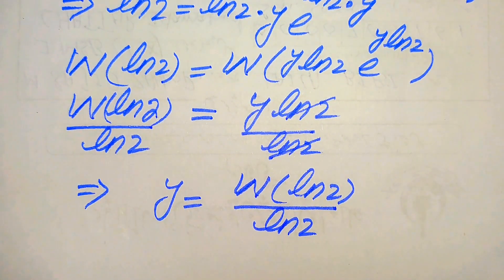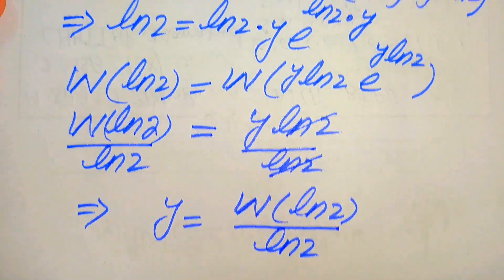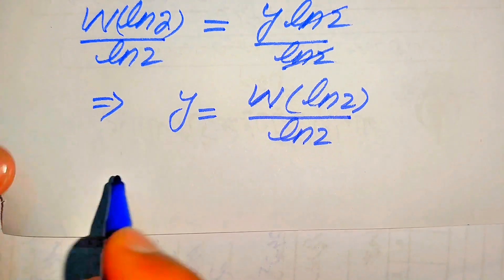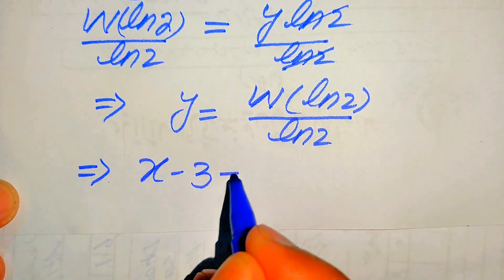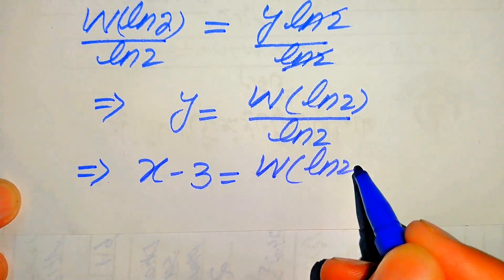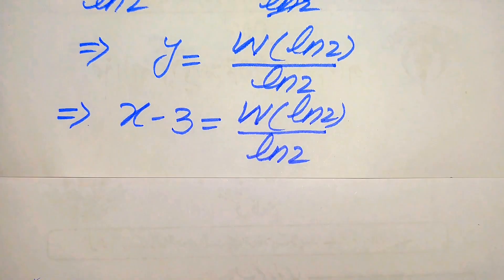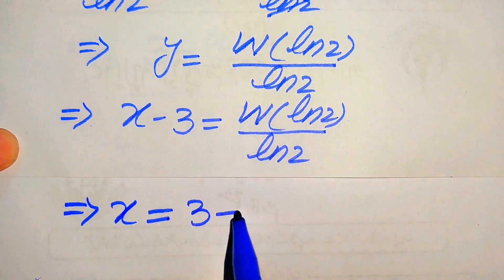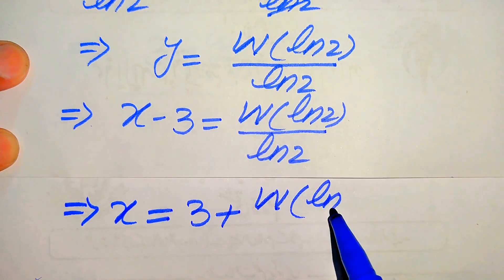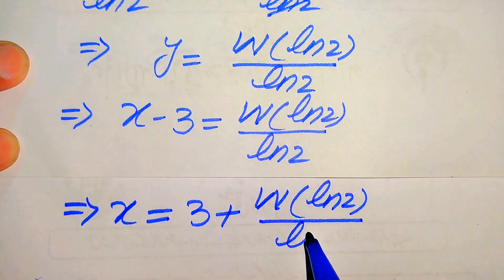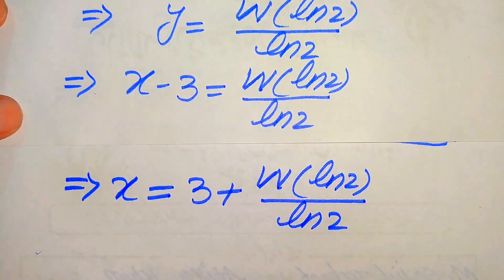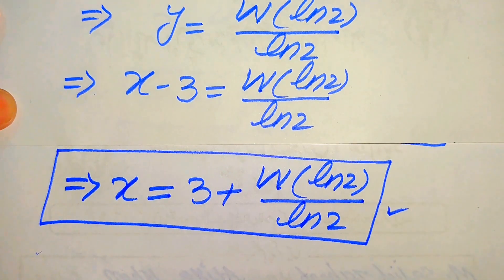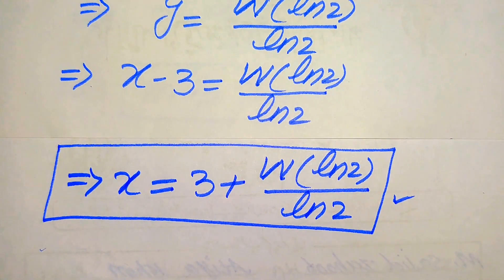Now we move backward and back-substitute y equals x minus 3. So x minus 3 equals W of log 2 divided by log 2. Moving the minus 3 to the right-hand side, we get x equals 3 plus W of log 2, divided by log 2. This is our final simplified form and the final value of x. Thank you so much for watching — please subscribe to my channel for more exciting videos.